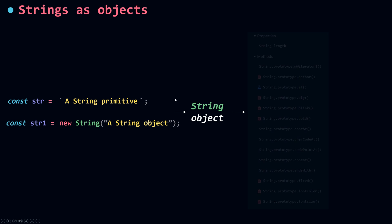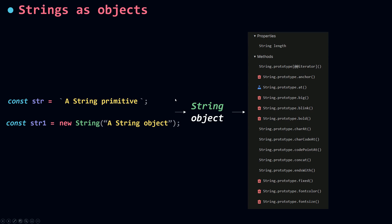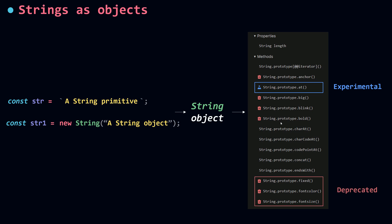The string object has one property, which is length, and lots of methods. Some are still in the experimental phase and some are deprecated, and we're not going to cover those. This leaves us with 34 methods and one property. Let's talk about the length property first.